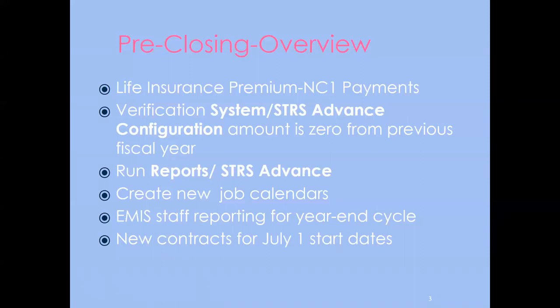For the pre-closing overview, we're going to cover: life insurance premiums for any employees retiring before the fiscal year; running verification reports for STIRS advance; checking the configuration on the STIRS advance and making sure that box is unchecked and cleared; how to create new job calendars; EMIS reporting for year-end and getting ready for the new one; and any contracts starting after the fiscal year ending in July.